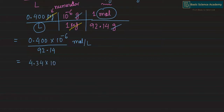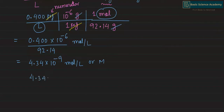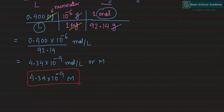This gives us 4.34 multiplied by 10 to the power of minus 9 moles per liter, or 4.34 × 10⁻⁹ M. This is our final answer. Since 0.400 has three significant figures, our answer should also have three significant figures, and 4.34 has three significant figures.